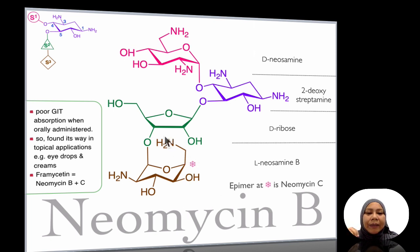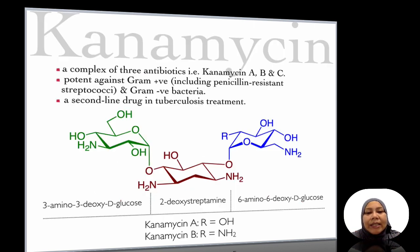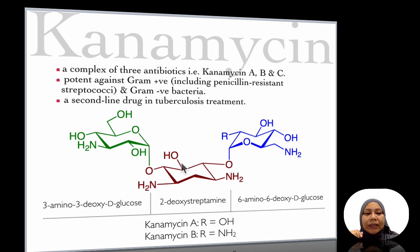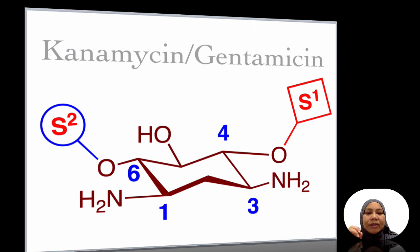If you flip the axial group to equatorial at one position of neomycin B, the epimer of neomycin B is actually neomycin C. Moving on to the third family — kanamycin and gentamicin — they have the 2-deoxy streptamine in the middle as the aglycone. The pattern of substitution is different compared to streptomycin and neomycin. In kanamycin and gentamicin, the substitution is at carbon 4 and carbon 6.